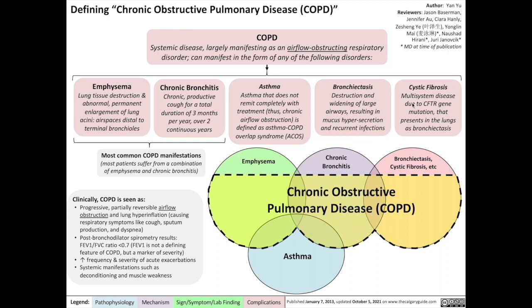The fifth manifestation of COPD is cystic fibrosis, which is actually a multi-system disease due to a CFTR gene mutation that presents in the lungs as bronchiectasis.